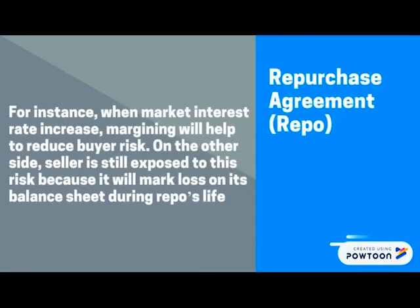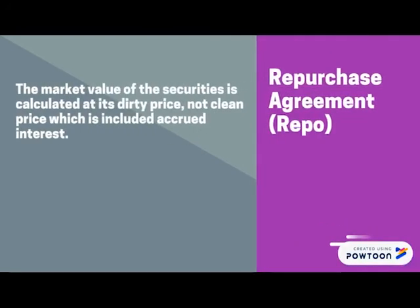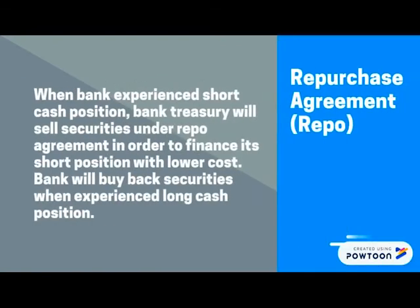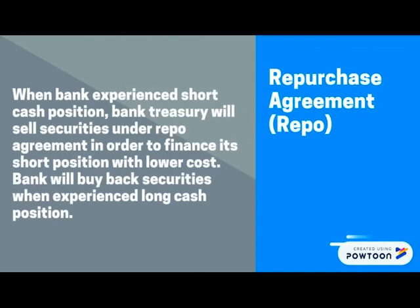For instance, when market interest rates increase, margining will help to reduce buyer risk. On the other side, the seller is still exposed to this risk because it will mark less on its balance sheet during the repo's life. The market value of the securities is calculated at its dirty price, not clean price, which includes accrued interest. When a bank experiences a short cash position, the bank treasury will sell securities under a repo agreement to finance its short position with lower cost. The bank will buy back securities when experiencing a long cash position.